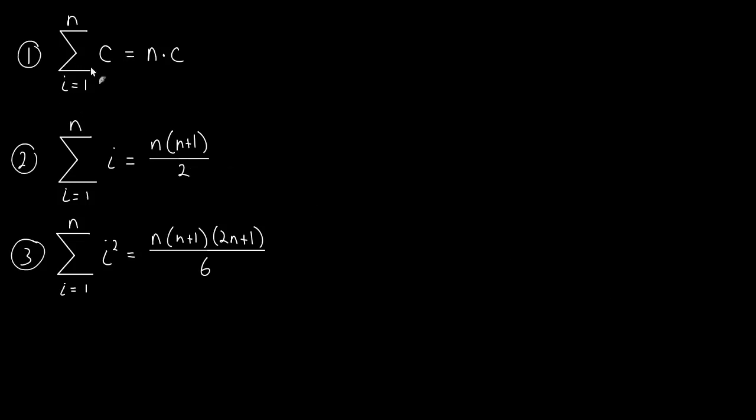Okay, so the very first formula says if we're summing a constant n many times, then the sum of that constant is just n times c. So let's see an example here. Suppose we wanted to sum i goes from 1 to 5 of the number 7. Well, according to our formula we have an n here and an n here, and we have a c here and a c here. And in our problem 5 is the n and 7 is the c, so all we have to do is 5 times 7, or in other words n times c according to the formula. And that's just 35.